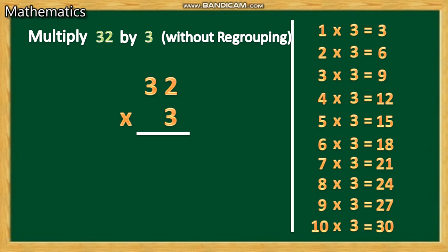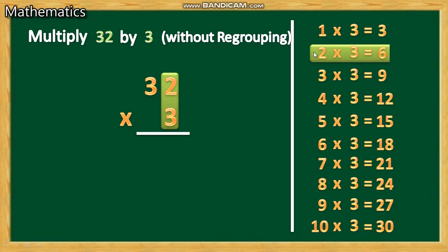Now we want to do this. First, 2 threes are — listen carefully — 2 threes are 6. Write this 6.